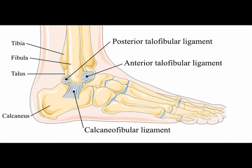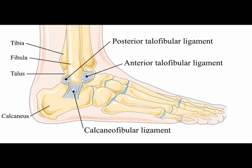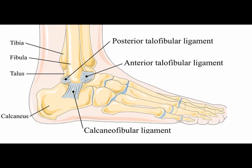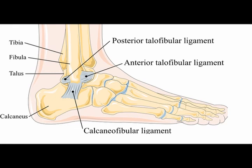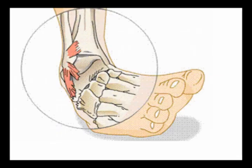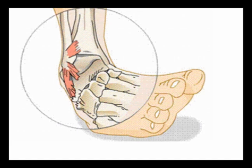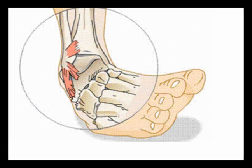Three ligaments attach the lower aspect of the fibula bone to the foot: the anterior talofibular ligament, the calcaneofibular ligament, and the posterior talofibular ligament. Most ankle sprains occur to the anterior talofibular ligament or the calcaneofibular ligament. In most cases, a lateral ankle sprain occurs traumatically when the athlete's ankle twists or turns to a larger degree than the ligaments would normally move. Traumatic ankle sprains are one of the most common sports injuries.